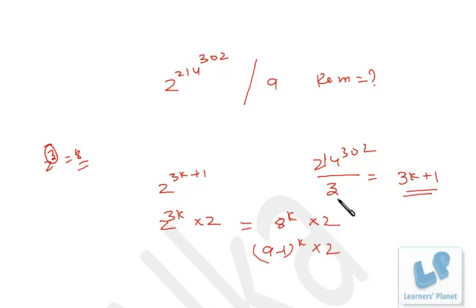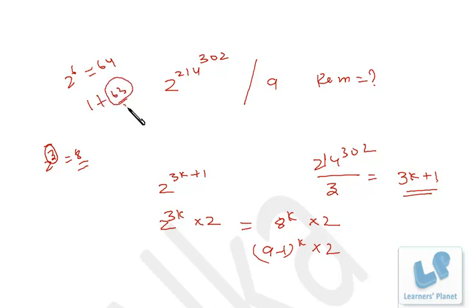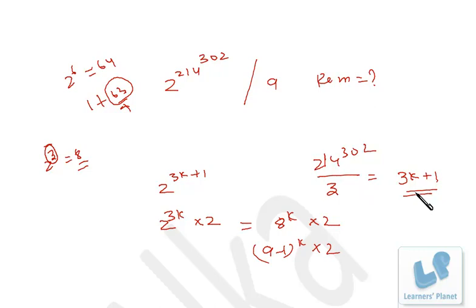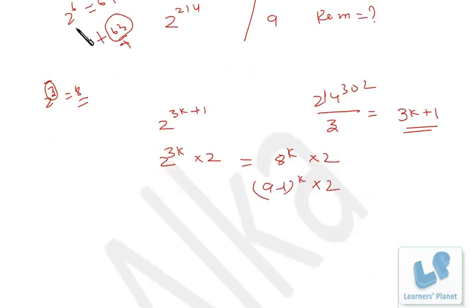To avoid that mistake, instead of finding the remainder by 3, we find the remainder by 6. Why 6? Because 2 raised to 6 is 64, which equals 1 plus 63 — and 63 is a multiple of 9. So we try to find the remainder of the exponent when divided by 6 and write it in 6k±format.